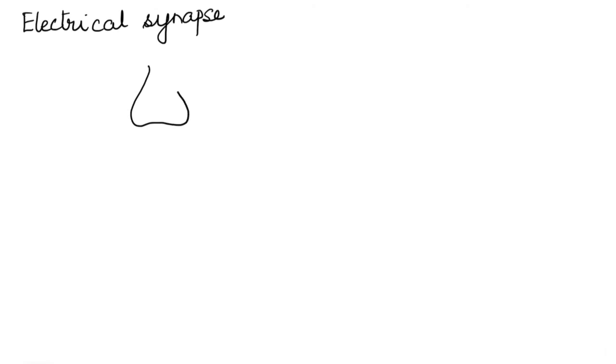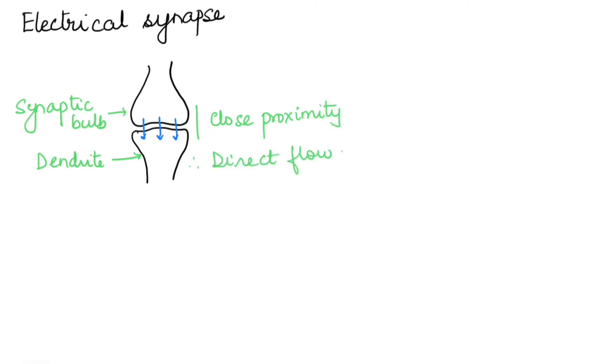Let us now have a look at the other type of synapse, that is the electrical synapse. Now in the electrical synapse, there is no gap present between the synaptic bulb and the dendrite of the other neuron. They are placed in very close proximity to each other, and the impulse therefore directly flows from one neuron, that is from the synaptic bulb to the dendrite of the other. These are normally found in crayfishes, coelenterates, annelids, and mollusks.